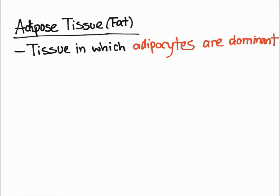In this video I'm going to talk about adipose tissue, which is also known as fat. Adipose tissue is tissue in which adipocytes — essentially fat cells — are the dominant cell type.